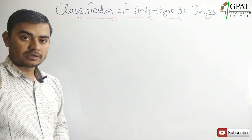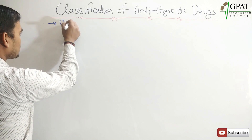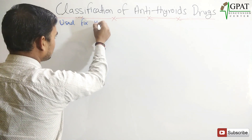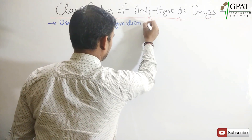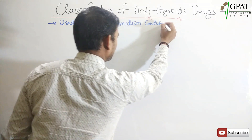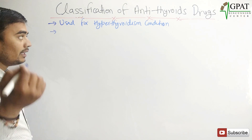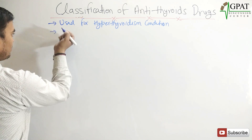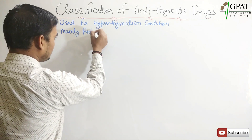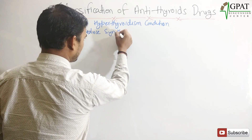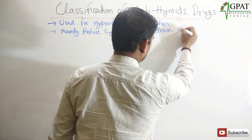Antithyroid drugs are mainly used for the treatment of hyperthyroidism. These drugs mainly reduce the synthesis or release of thyroid hormone.